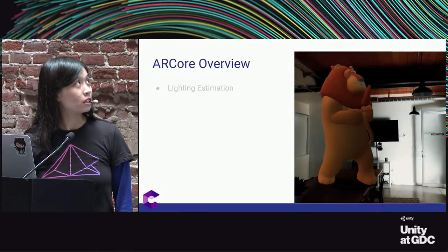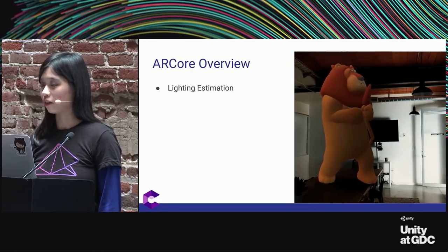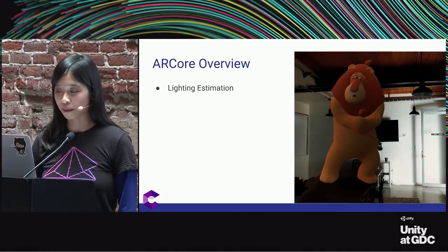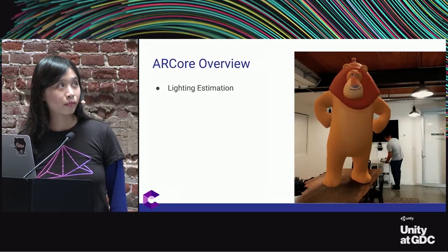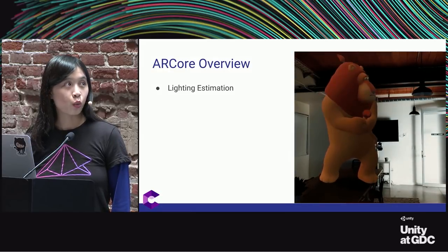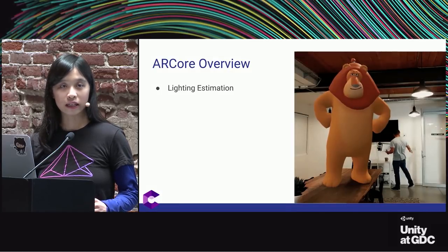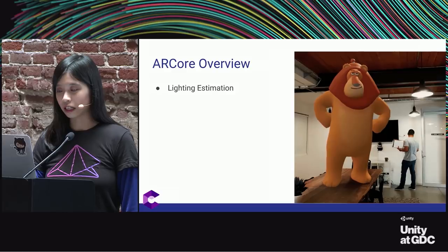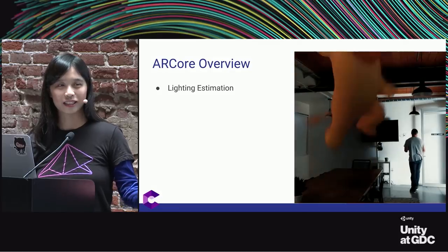ARCore also provides lighting estimation. It can detect the lighting information of an environment and gives back a value representing the average intensity of the ambient light. This lets you render objects with realistic lighting. In this example, we used Unity Lighting Estimation Aware shaders — it takes that average intensity value and multiplies the color by it, so when the room darkens, the lion also darkens. It also lets us detect when that average value changes, enabling lighting-aware interactions like this scaredy lion.